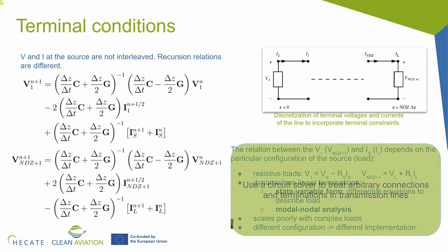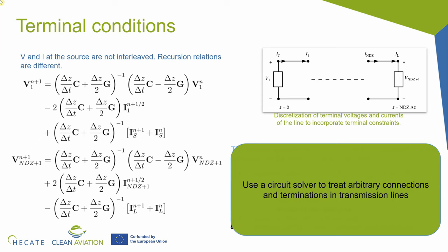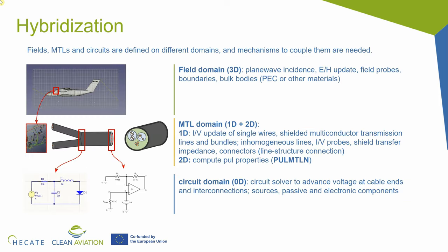This is a problem, and our approach has been to use a circuit solver to treat interconnections. This means that when we have wiring networks connected by complex circuits, we will use a circuit solver to treat them. So now we have three descriptions for three different levels — fields, transmission lines, and circuits — but they are defined on different domains, so we are going to need mechanisms to couple them.